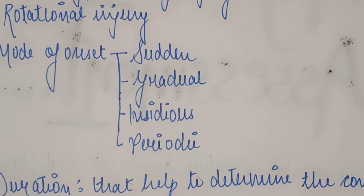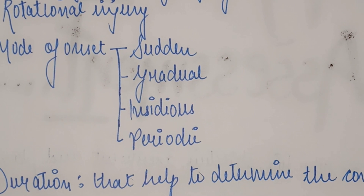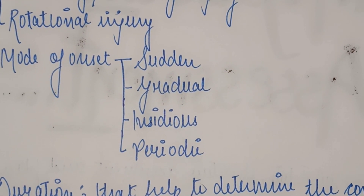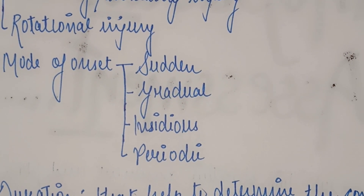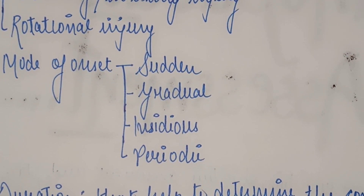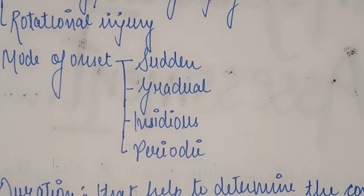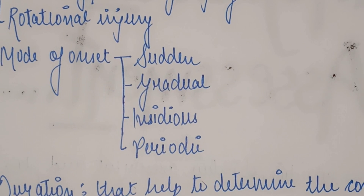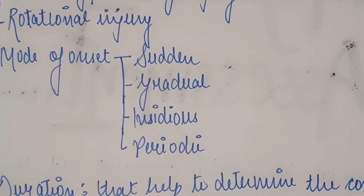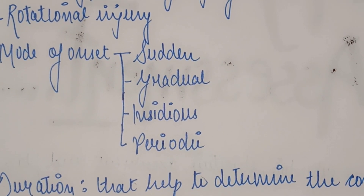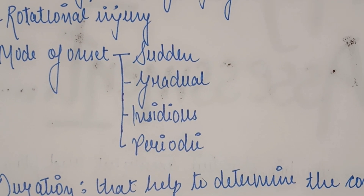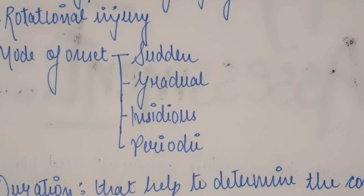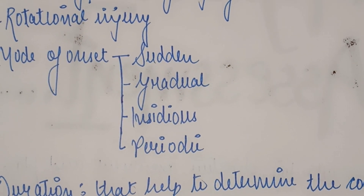Now we will talk about the mode of onset — what is the mode of onset, how the pain or symptoms arise. Symptoms are the things which are detected by the patient — what the patient tells you. Signs are what are detected by the doctor through investigation.